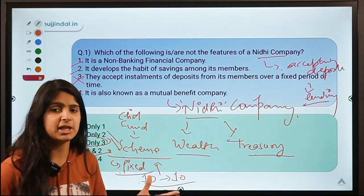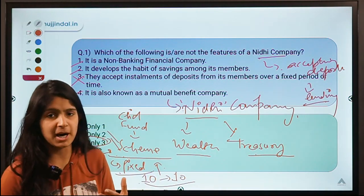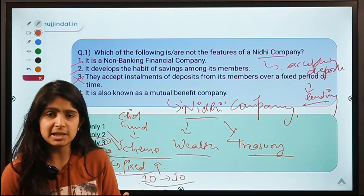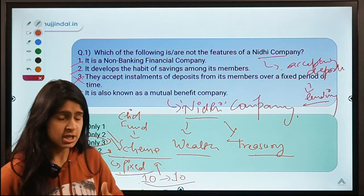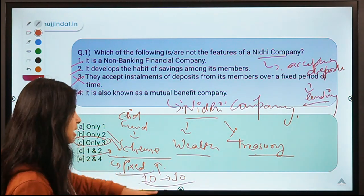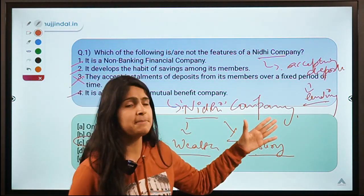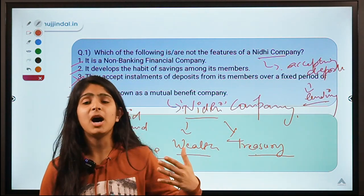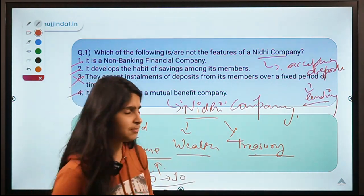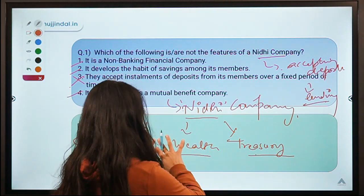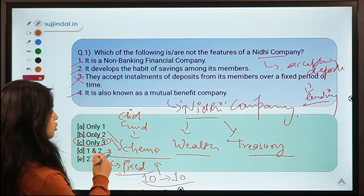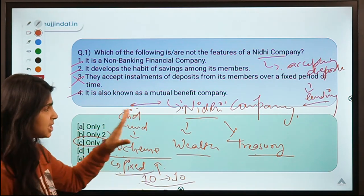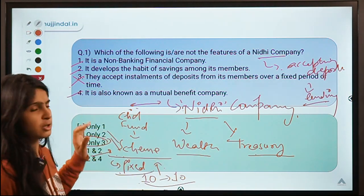In a chit fund, the committee is convened as many times as there are members so that loans can be distributed. But the basic work of a Nidhi company is to collect money and allow members to take it whenever they need it. So there is a difference in the basic structure and operation of both.